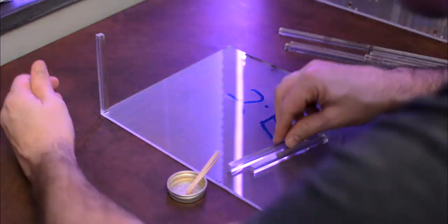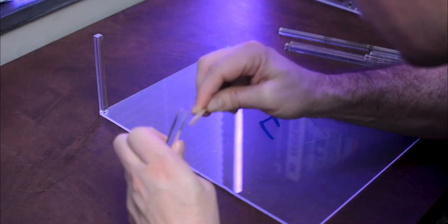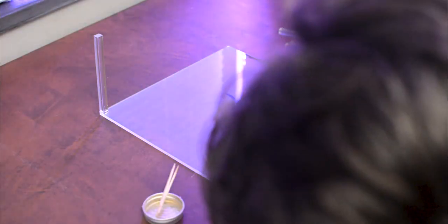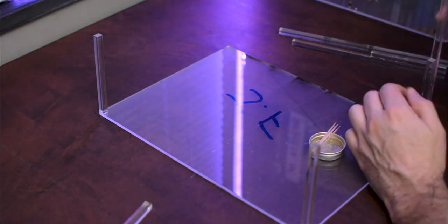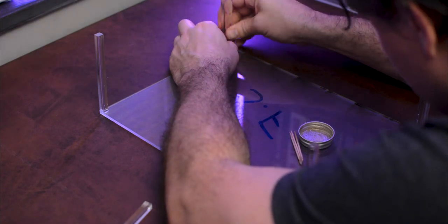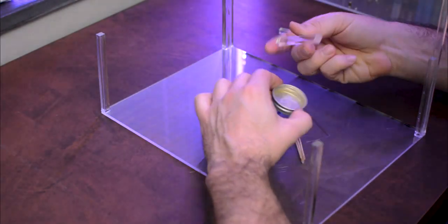Now it was time to glue all the support rods to the bottom board. Acrylic glue is really strong and it needs a catalyst to work, so you need to mix it about five minutes before you use it to let the reaction happen.